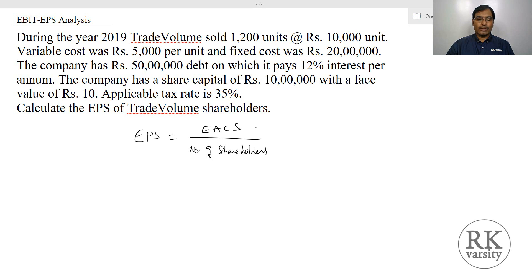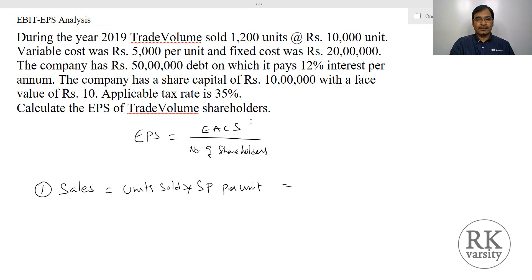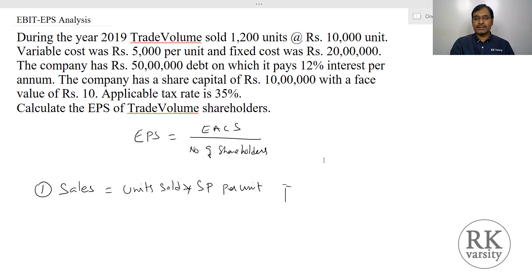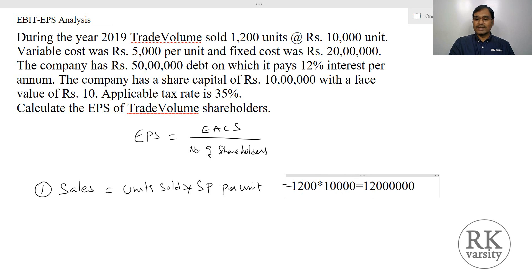The first step is to calculate sales. Sales equals units sold times selling price per unit. In our example, units sold are 1,200 units and selling price per unit is 10,000. So sales equals 1,200 times 10,000, giving us your sales figure of 1 crore 20 lakhs.